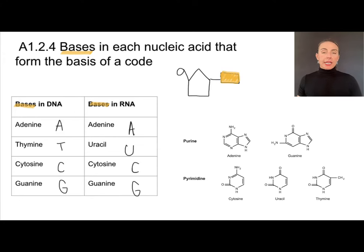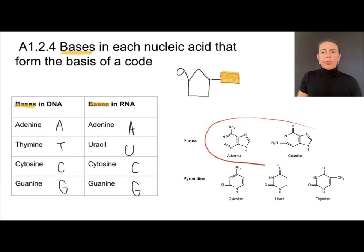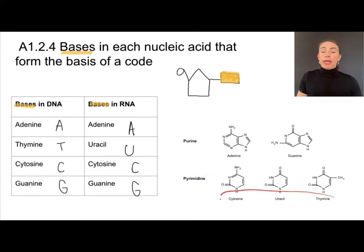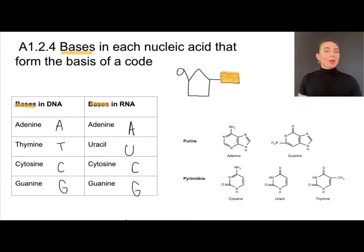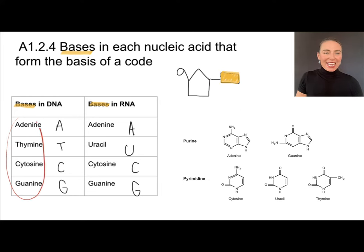These bases can also be classified as either purines — adenine and guanine — or pyrimidines — cytosine, uracil, and thymine. Purines have a double-ring structure, while pyrimidines have a single-ring structure. We need to know the names of these bases and which are purines and which are pyrimidines.